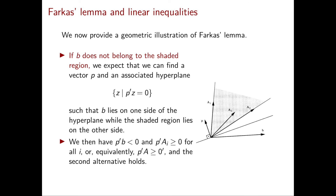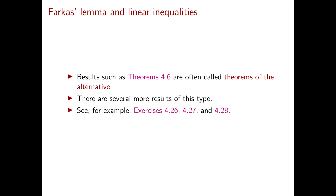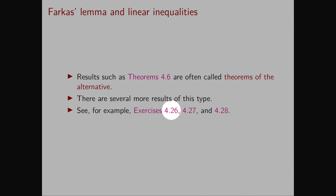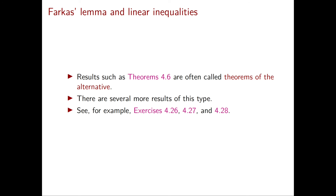So this second case is exactly case B of Farkas Lemma. The structure of Farkas Lemma is of the type 'exactly one of these two alternatives holds,' and this is why results of this type are also called theorems of the alternative. There are several interesting results of this type, and you can also find some in your exercises, especially exercises 4.26, 4.27, and 4.28. Note that any theorem of the alternative that says exactly one among A and B holds can be restated with an if and only if — equivalently, A holds if and only if B doesn't hold. And with this we conclude our video on Farkas Lemma.